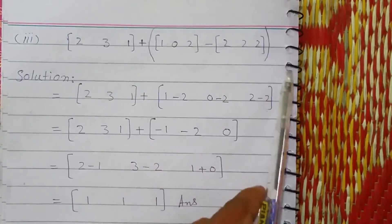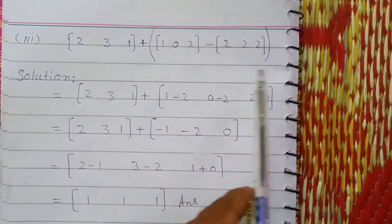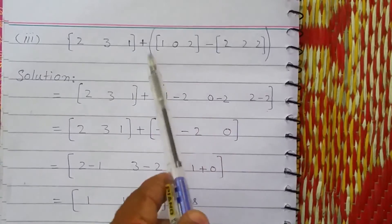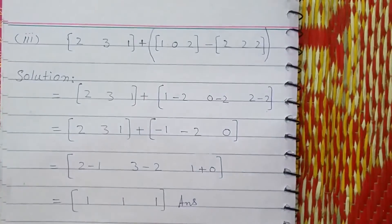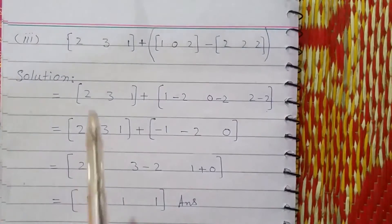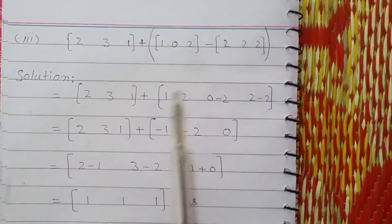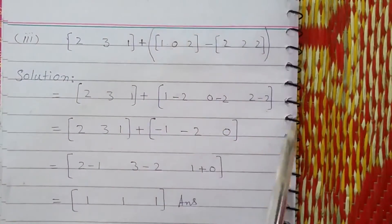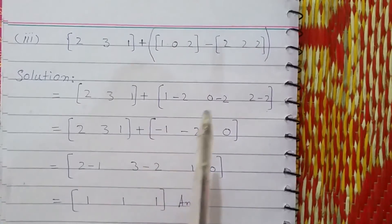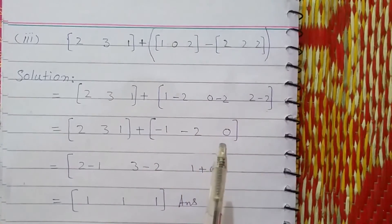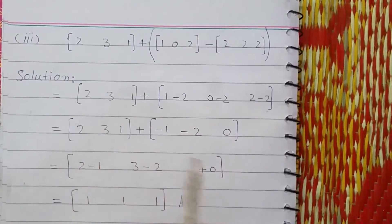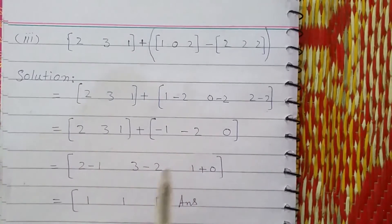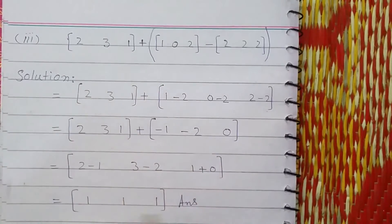In this question we will first simplify the expression in the parenthesis, because parenthesis must be solved first. So here: 1 minus 2 is minus 1; 0 minus 2 is minus 2; 2 minus 2 is 0. Now we can add these two matrices: 2 minus 1 is 1; 3 minus 2 is 1; and 1 plus 0 is 1.